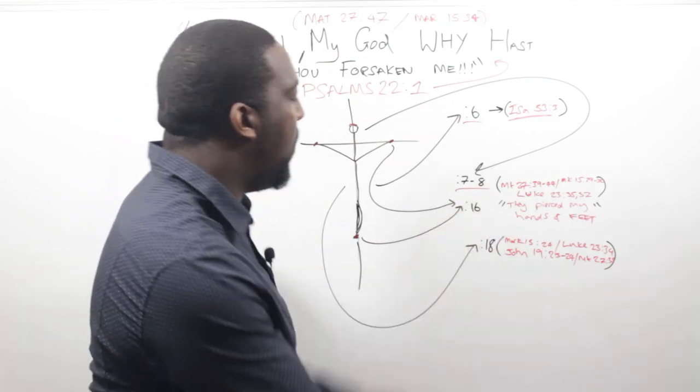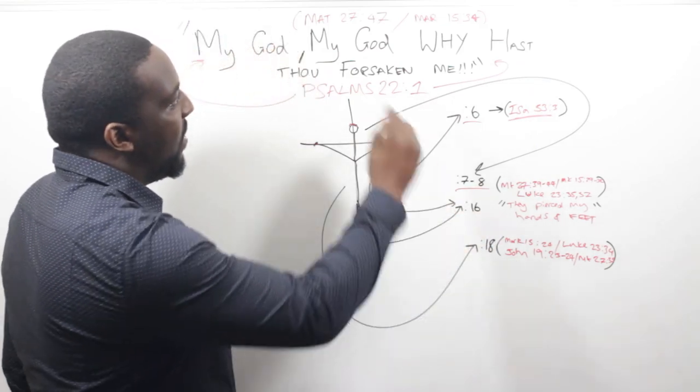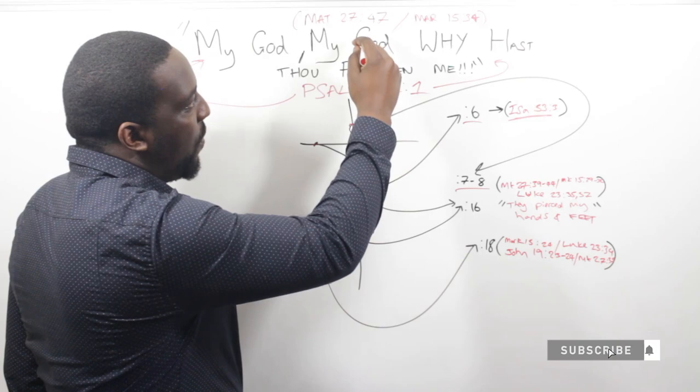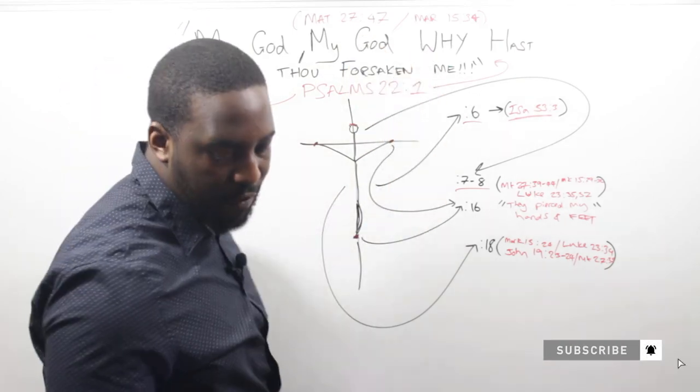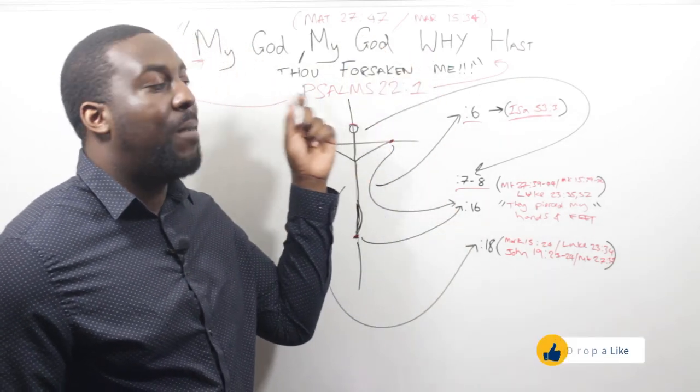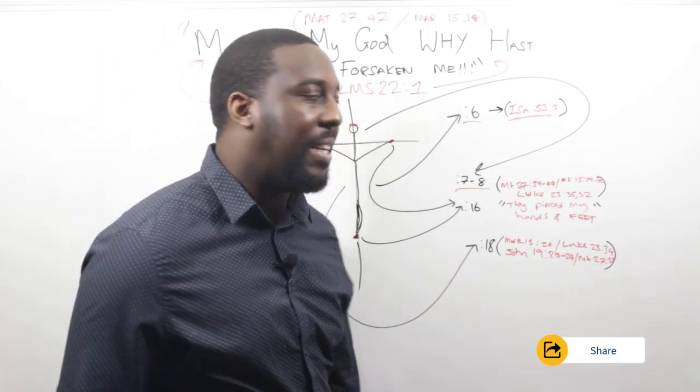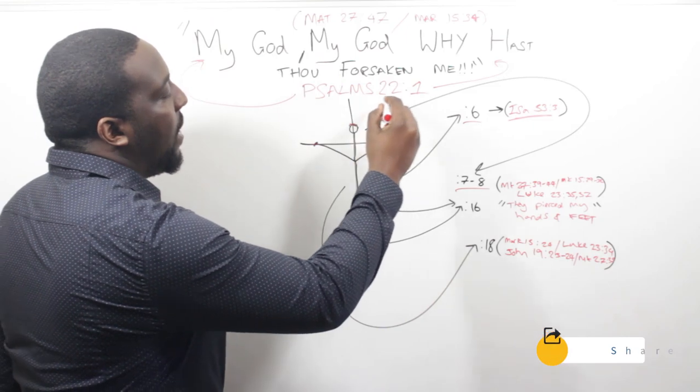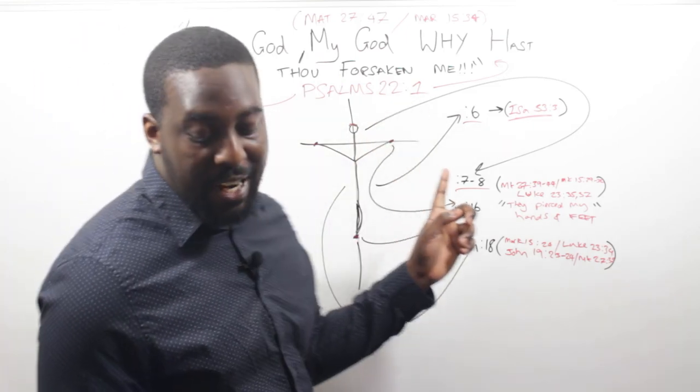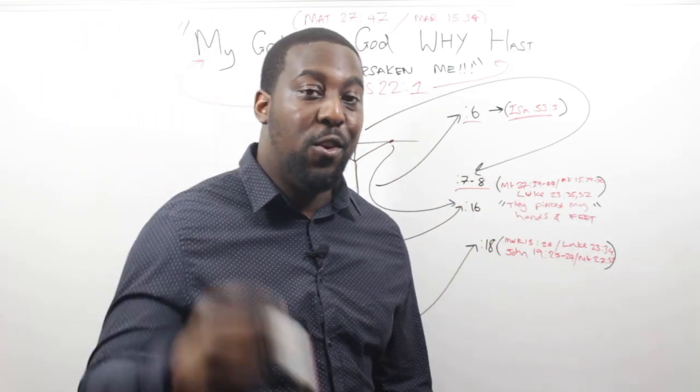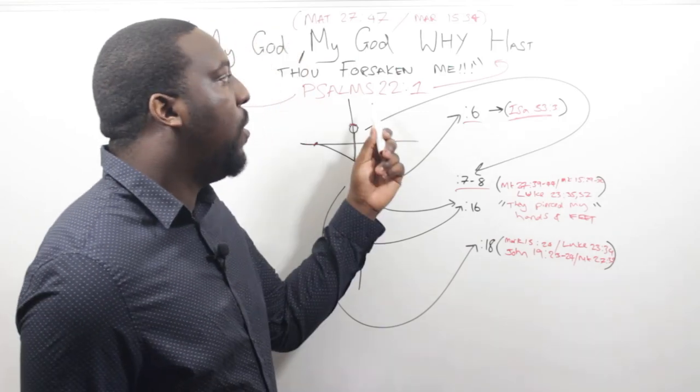Now what we have here is Matthew 27, verse 47, and Mark 15, verse 34, where Jesus says these famous words, My God, My God, why has thou forsaken me? Eli, Eli, lama sabachthani. And what he was getting them to do, and what he was getting you to do, was to know your Bible.